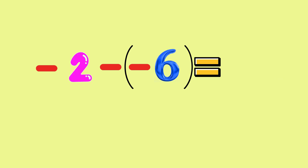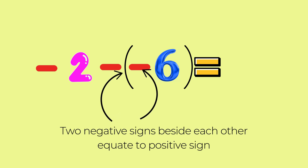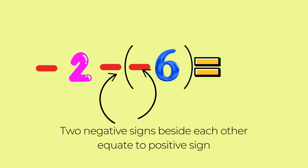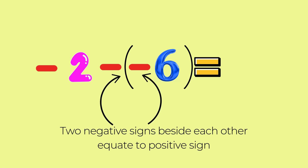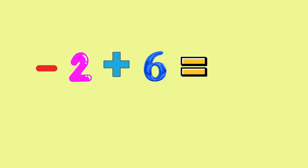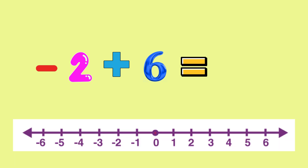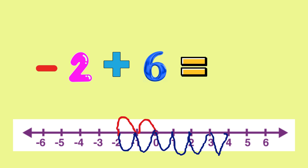Now let's try negative 2 minus negative 6. Remember, whenever we have two negative signs immediately beside each other, they equate to a plus sign. So we are really calculating negative 2 plus 6. We start at 0 and move two steps to the left for the negative 2 — 1, 2 — and land on negative 2. Then we go six steps to the right for the plus 6 — 1, 2, 3, 4, 5, 6 — ending up at positive 4. So negative 2 plus 6 equals 4.